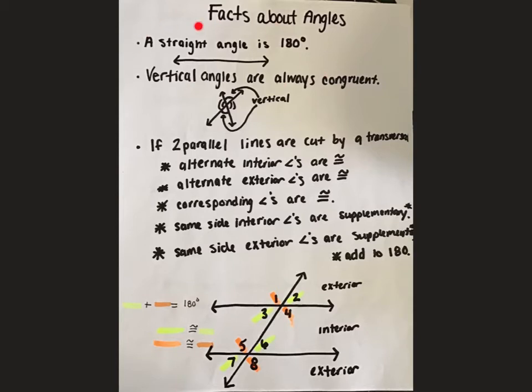Remember that a straight angle adds up to 180 degrees. Vertical angles, remember, are ones that are across from one another, and they are always congruent.